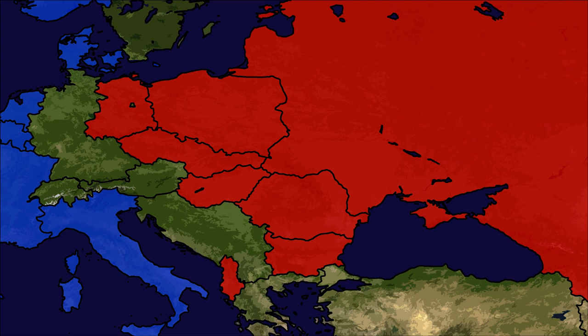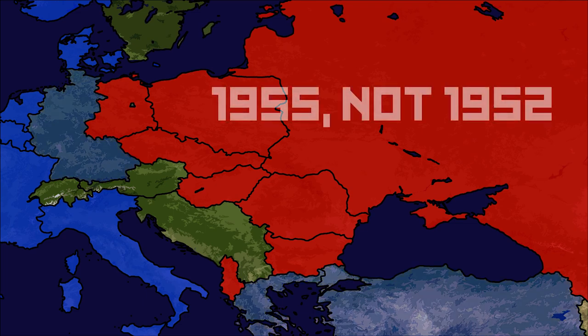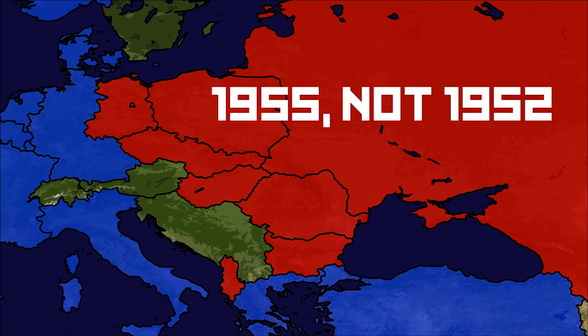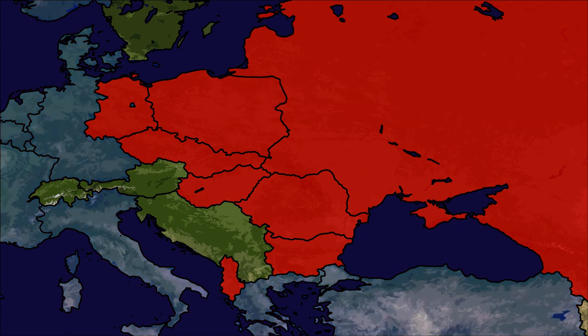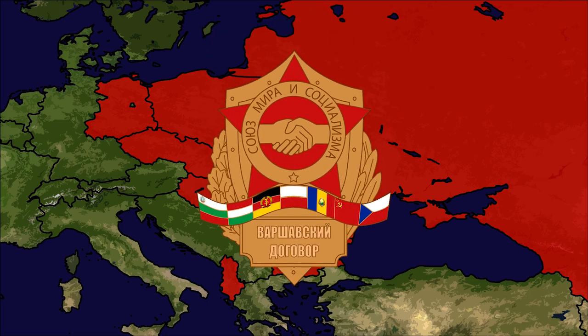After the NATO alliance officially formed in 1949, the Soviet Union realized it needed a grip on its allied states in Eastern Europe. When West Germany joined NATO in 1952, talks of a full military alliance for the communist states in Eastern Europe were now in full swing. The Warsaw Pact was officially signed into existence in May of 1955 in — you guessed it — Warsaw.